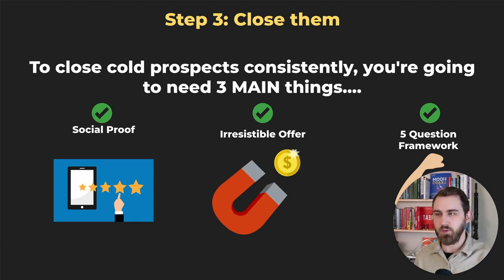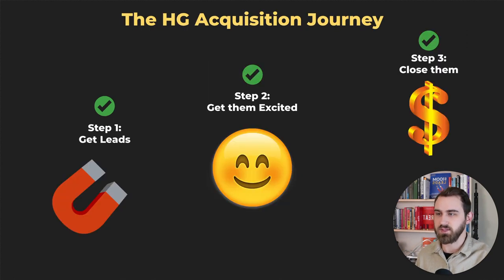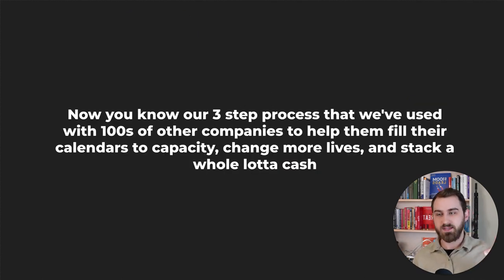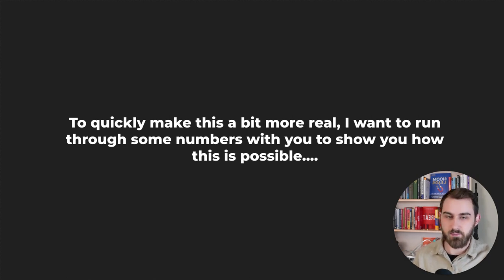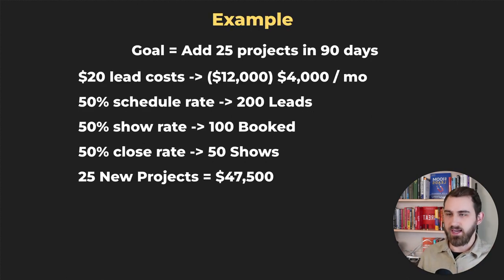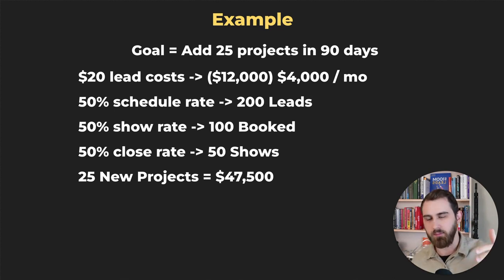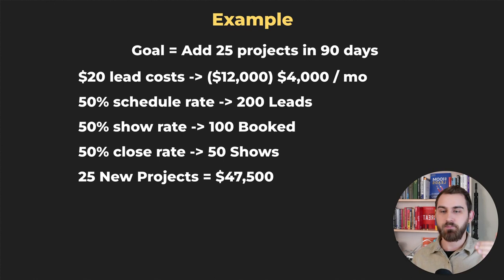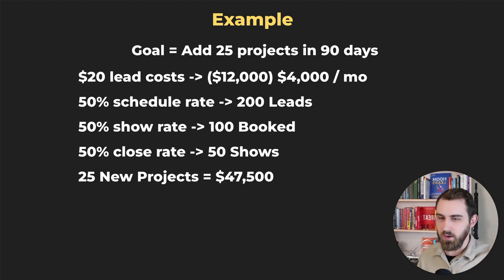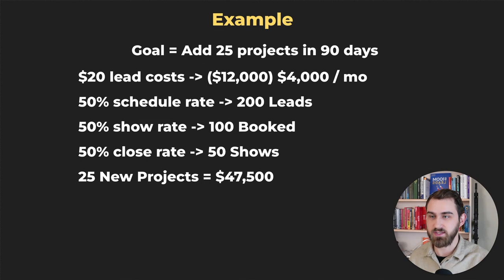Now you know how to get new leads, get them excited, and close them. Let's run through some numbers. Say your goal is 25 projects in 90 days. Assuming a $20 cost per lead, you'd spend about $12,000 in ads over 90 days — roughly $4,000 per month. With a 50% booking rate, 50% show rate, and 50% close rate, you'd get about 200 leads, 100 bookings, 50 shows, and 25 closed projects — resulting in $47,000 in closed commissions in three months.